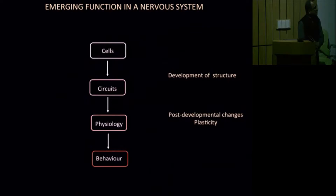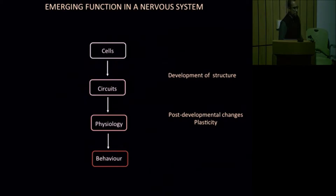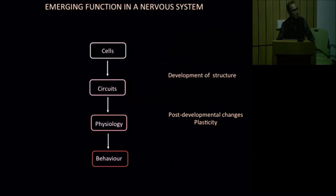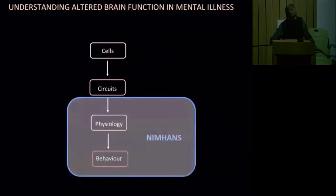The brain, of course, undergoes development. During this process, cells get connected to form circuits, and these then start operating as one develops and give you behavior. In addition, after development, the brain also undergoes changes in structure and function called plasticity, which may manifest in an abnormal situation as disease.